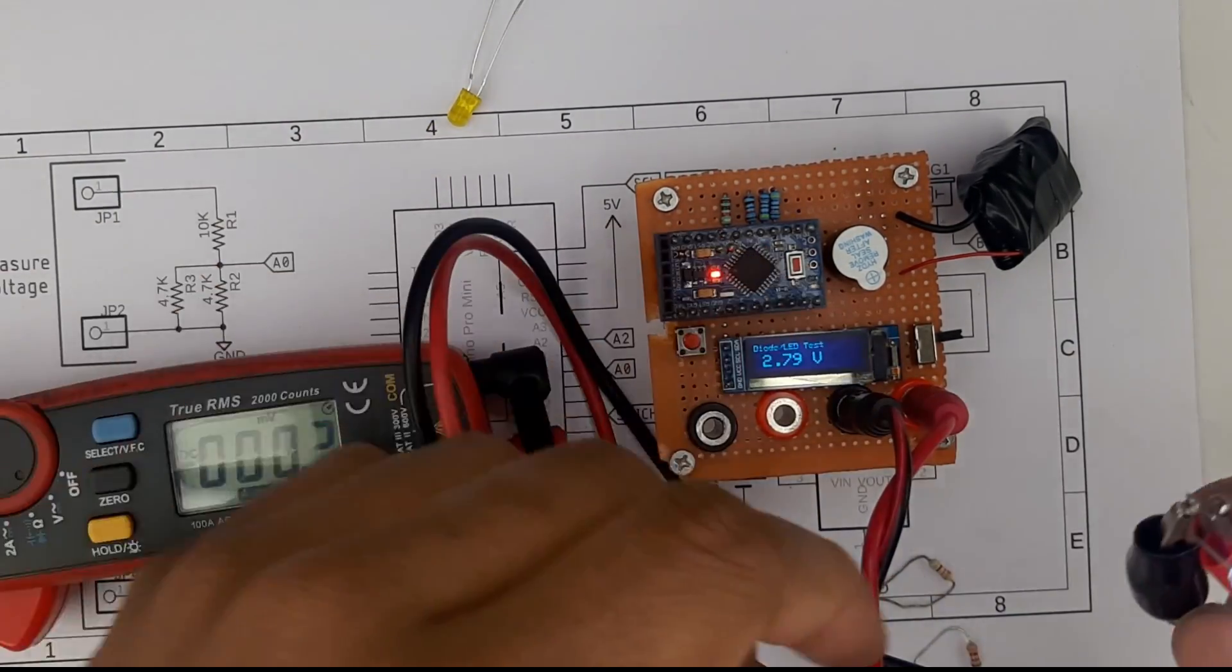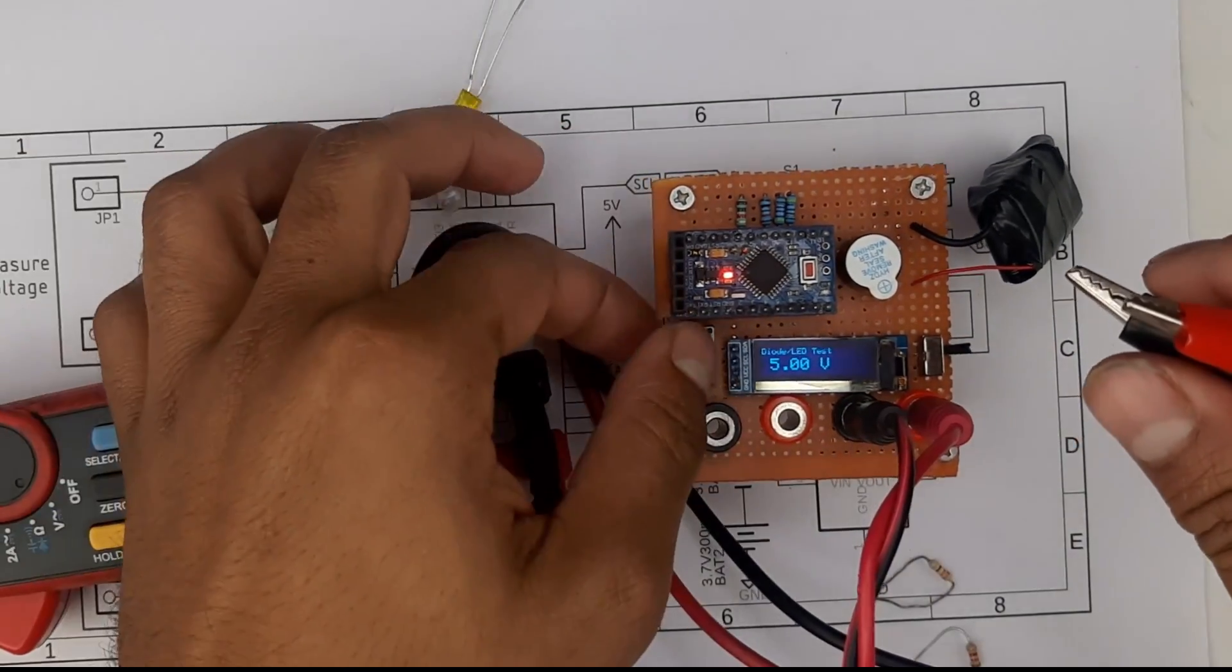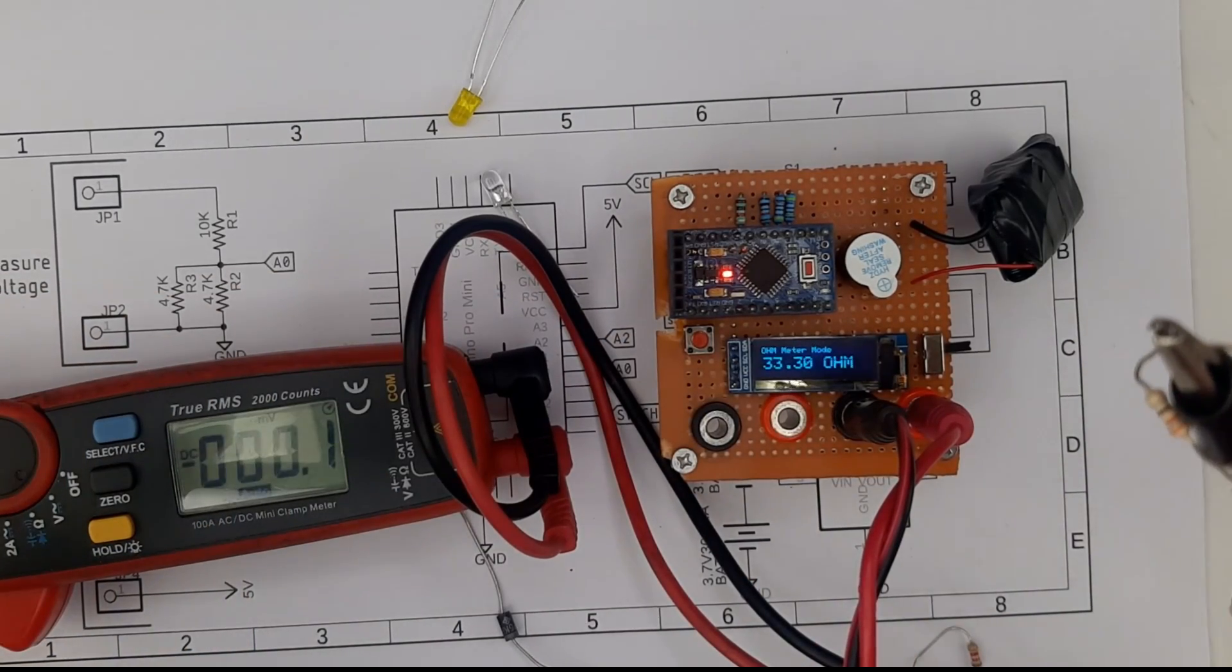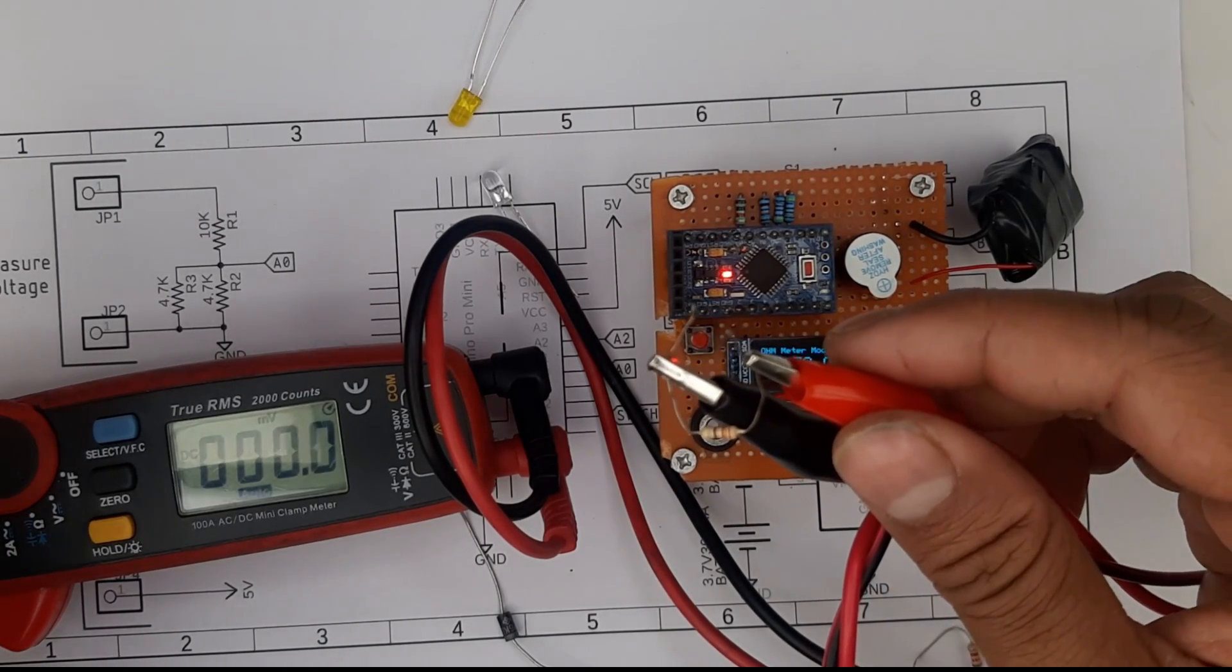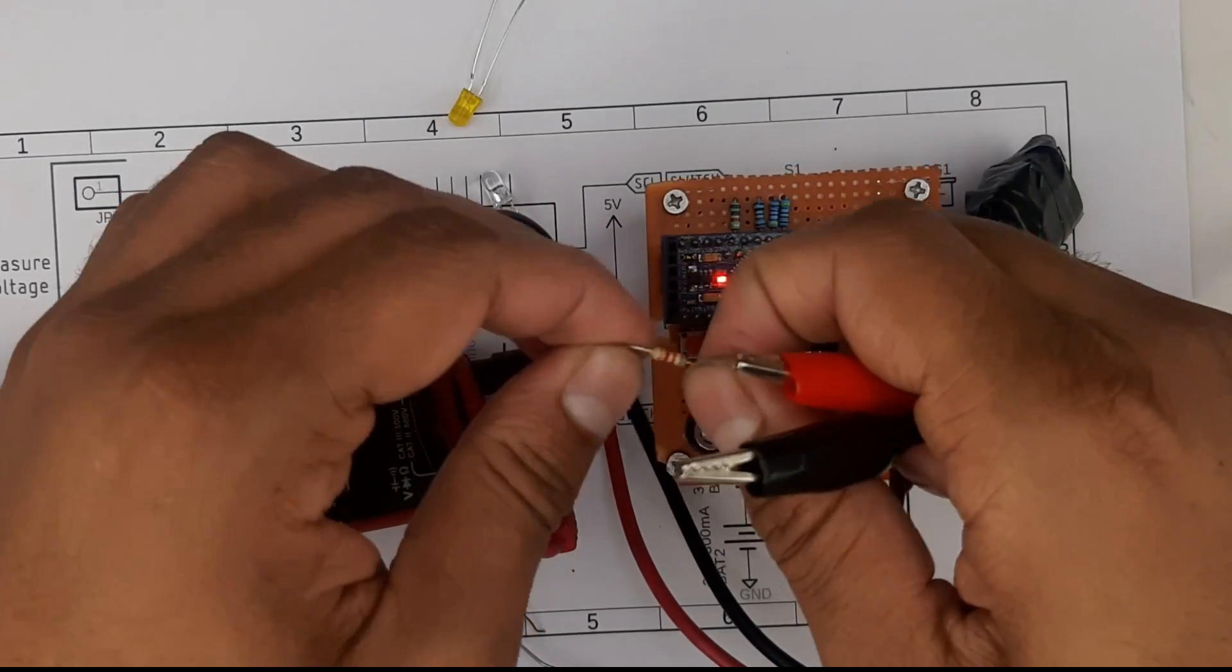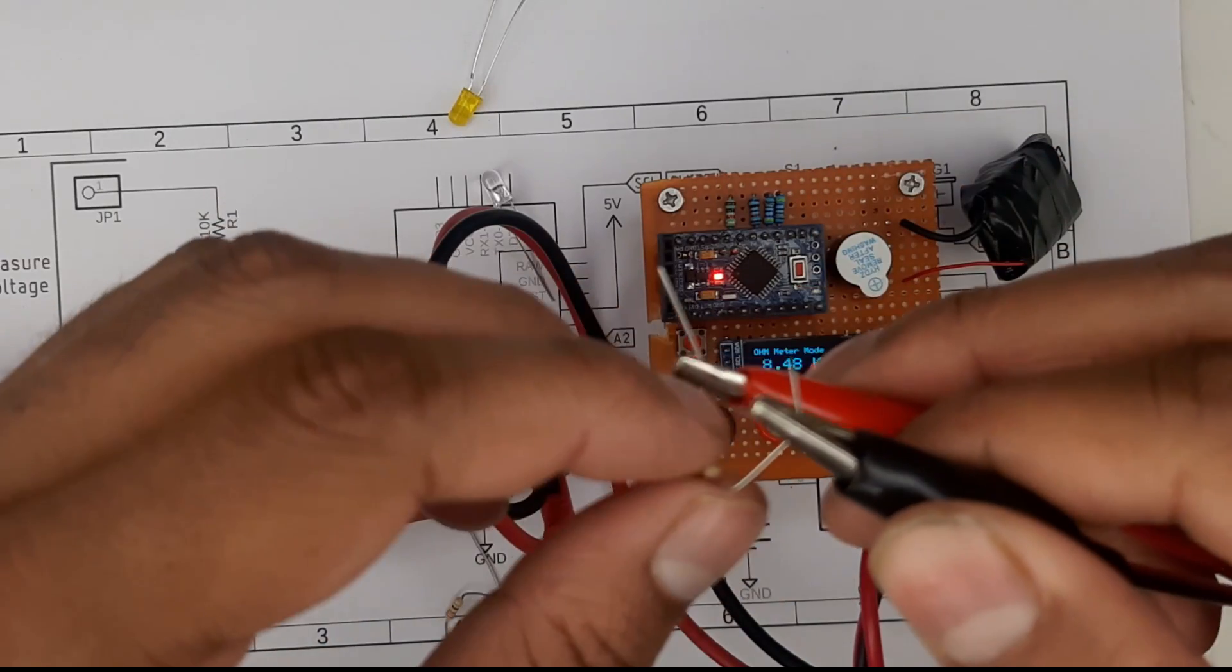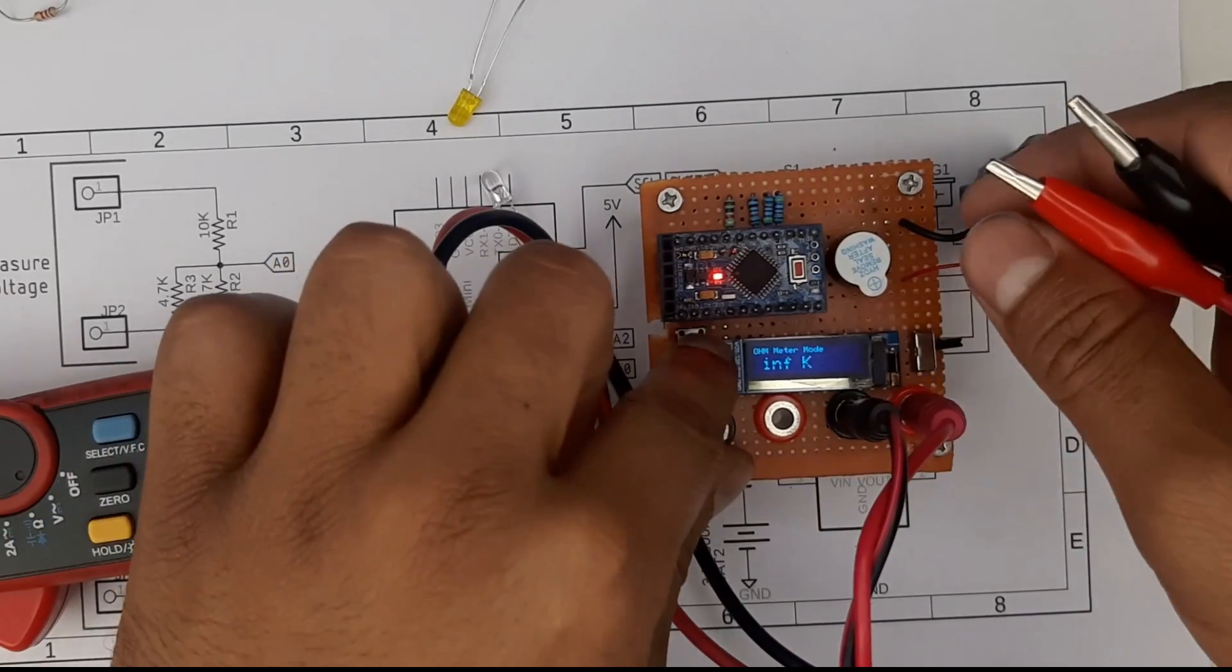Next mode is resistance mode. This is a 33-ohm resistor and if I connect this you can see it shows exactly 33.3 ohms including that resistance. Now let me connect another resistance. This is 8.2 ohms. As you can see it's showing 8.4. The higher you go the less accurate this gets. This is a 5 percent tolerance so it's within tolerance.